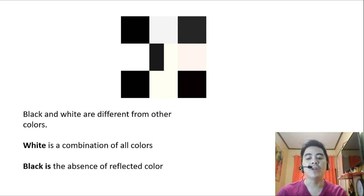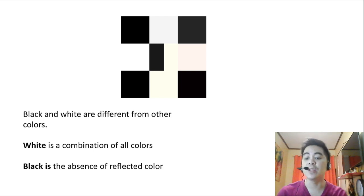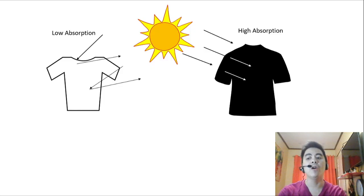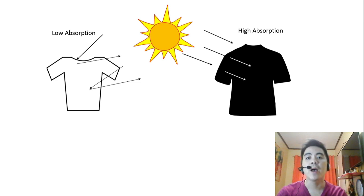Black, on the other hand, is the absence of reflected color. When we see a black object, it means the object is absorbing almost all the colors of light and none of the visible colors are reflected. We have here an example of how colors affect heat absorption. We have two colors of clothes — white clothes and black clothes. White has low absorption and black has high absorption.